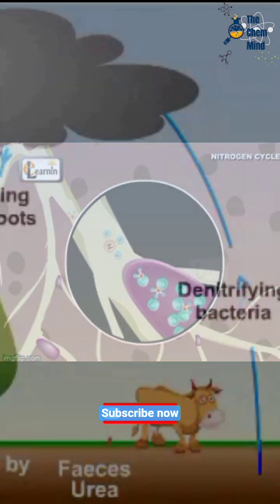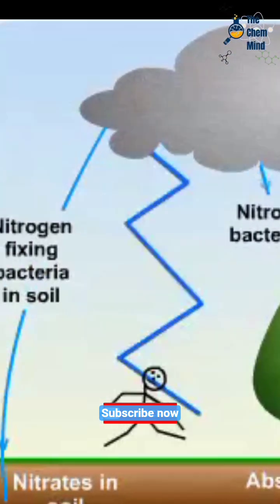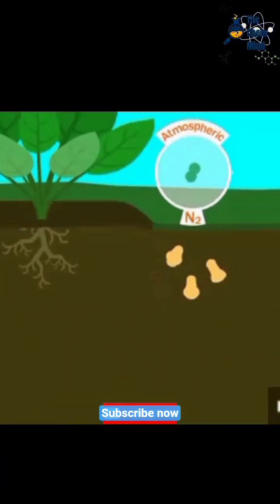Plants can't use nitrogen gas directly. They rely on bacteria and lightning to fix nitrogen into compounds they can absorb.